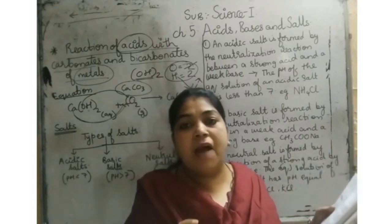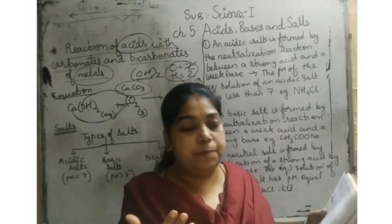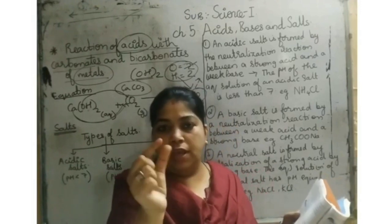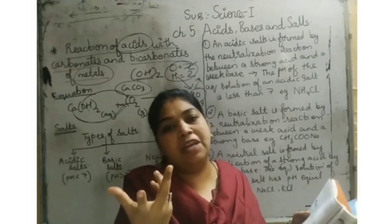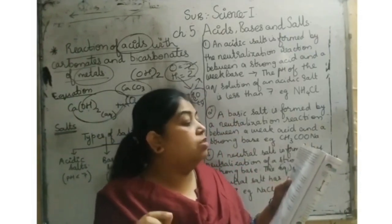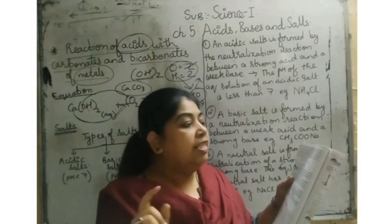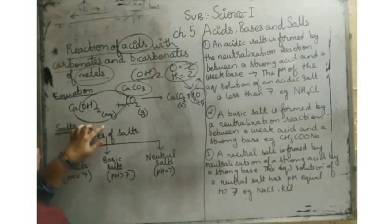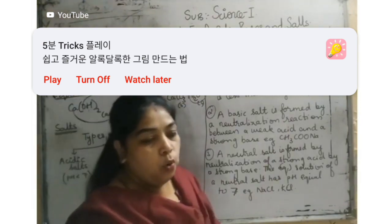A precipitate is formed — that white milky solution is called a precipitate. You can take chalk, rub it to make a powder, add a little water — that white precipitate is CaCO₃, formed in the reaction with lime water. This reaction can be represented as: Ca(OH)₂ + CO₂ → CaCO₃ + H₂O.